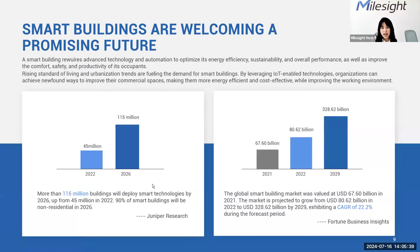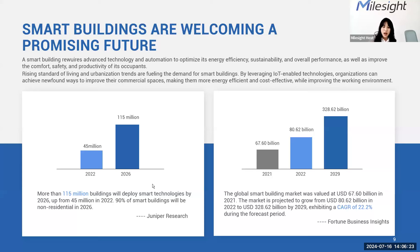Here are some statistics I want to briefly share. We find there are over 115 million buildings that will deploy smart technologies by 2026, according to Jupiter Research — covering both residential and non-residential buildings. There are still opportunities as conventional buildings transition to smart IoT buildings. The global market is also growing in this area. This is a good time to implement IoT solutions — it not only brings savings, it's also a tendency of the world's future. Smart buildings are welcoming a promising future.